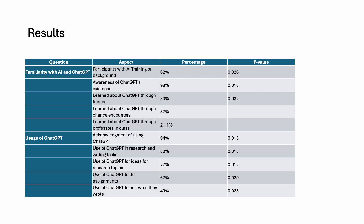We can see the issues concerning the use of ChatGPT. More than 94% of the respondents acknowledge using the language model ChatGPT, indicating a widespread integration into the academic workflow. In terms of application, more than 80% use ChatGPT for research and writing tasks, more than 77% use it for ideas for research topics, more than 67% do their assignments with it, and more than 49% use it to edit what they have written.